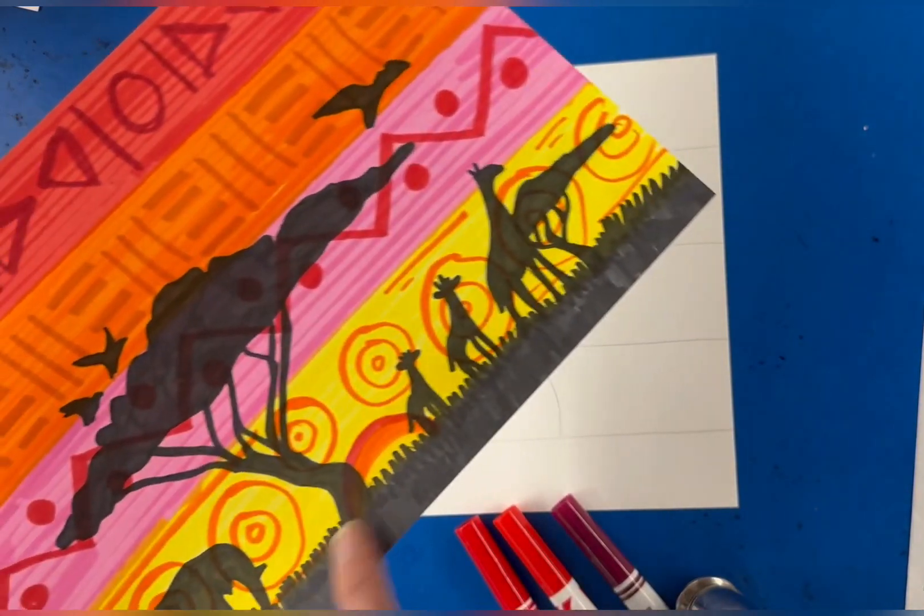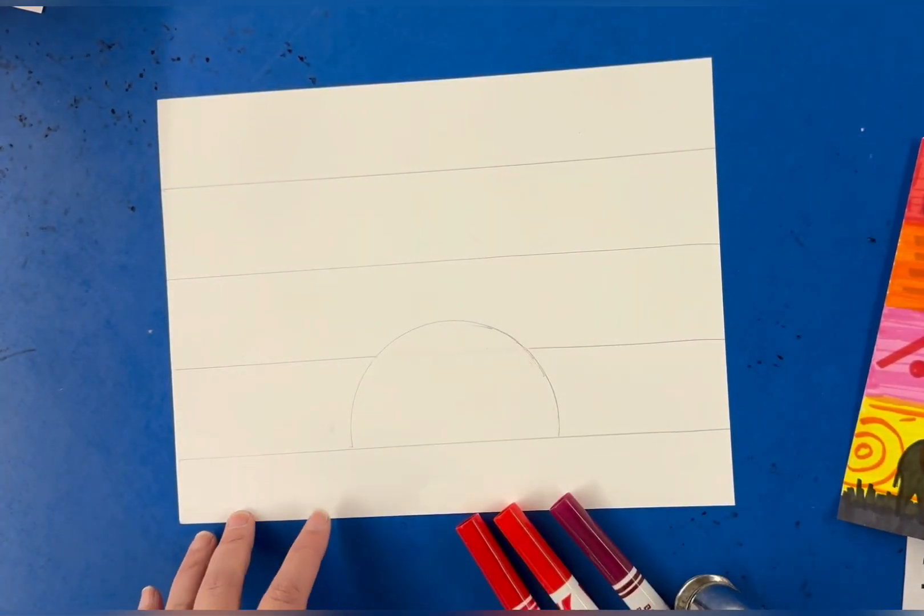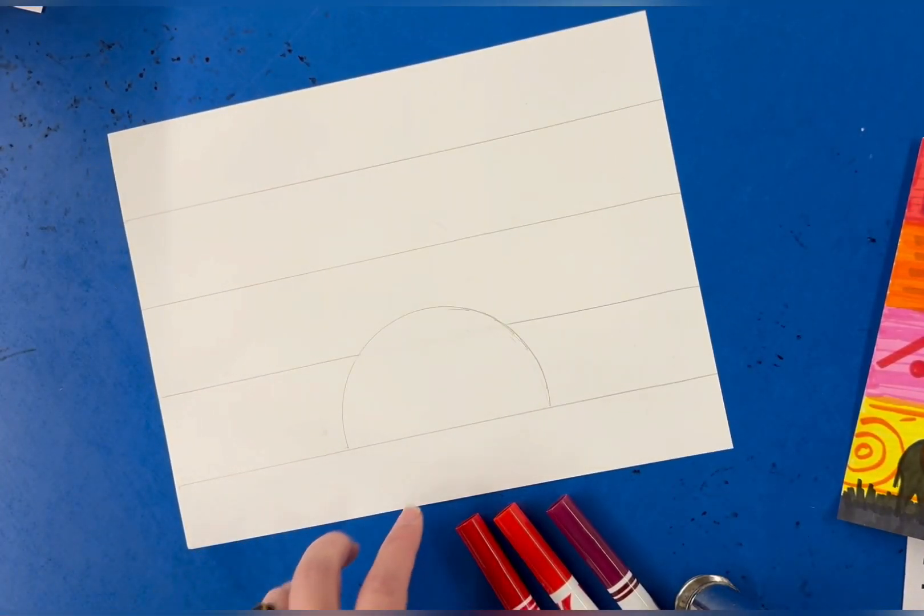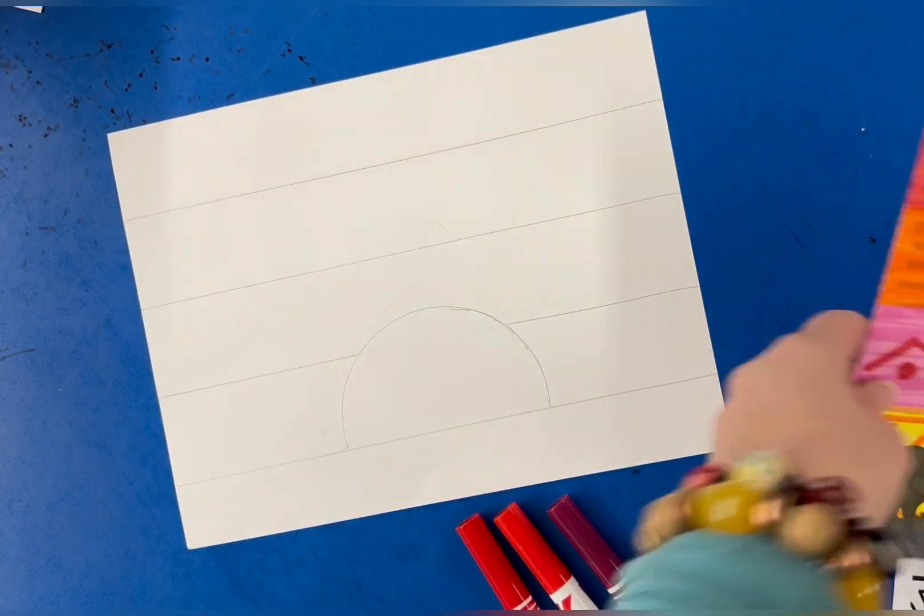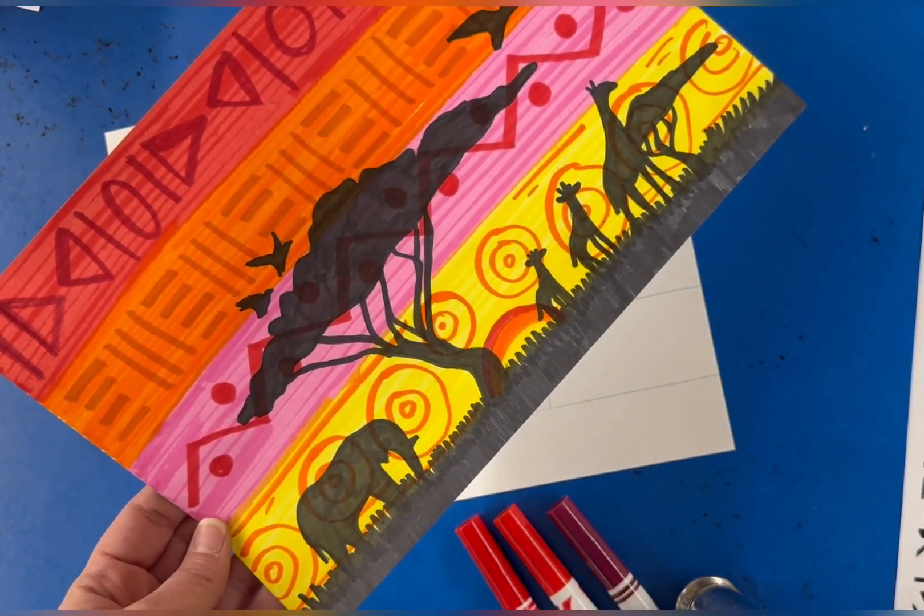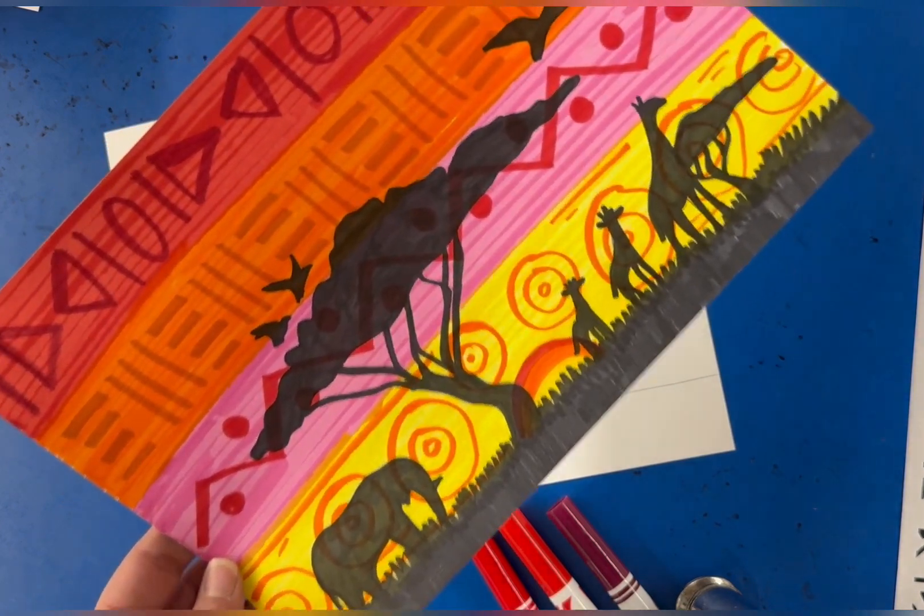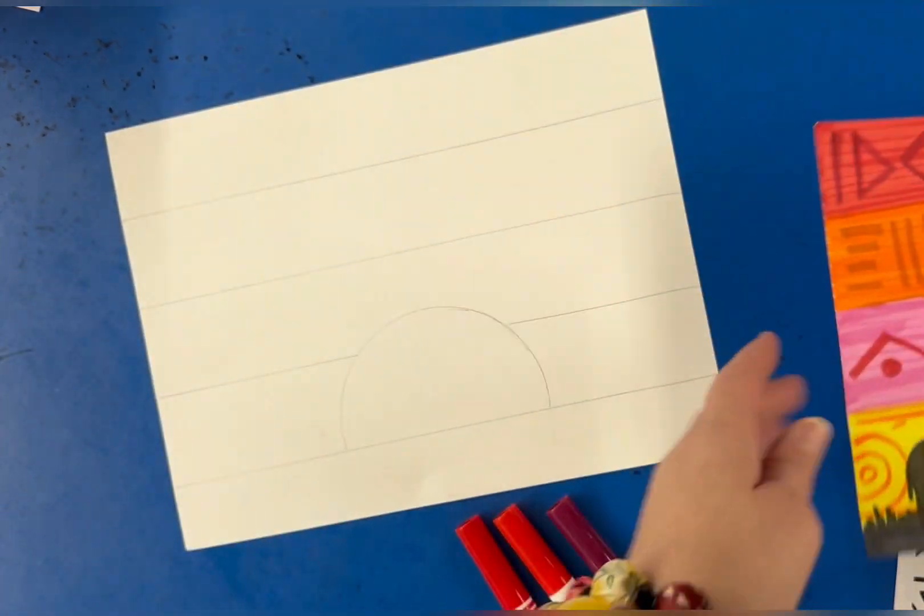So what you're going to do first is today we're just going to do our background. We're not going to do the silhouette part today. You're going to get a paper that looks like this with the Sun. I made your Sun bigger in this one than in mine because mine doesn't show up really once I get that silhouette on there.